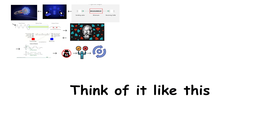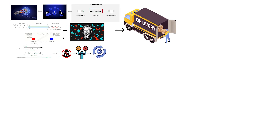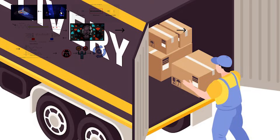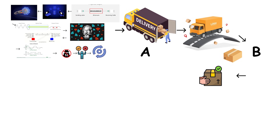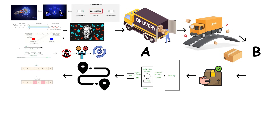Think of it like this: the physical layer is the delivery truck. It doesn't know what's in the packages, it doesn't know where they're going, it just carries the boxes from point A to point B. All the smart stuff — the addressing, the routing, the error checking — that happens in the 6 layers above it.